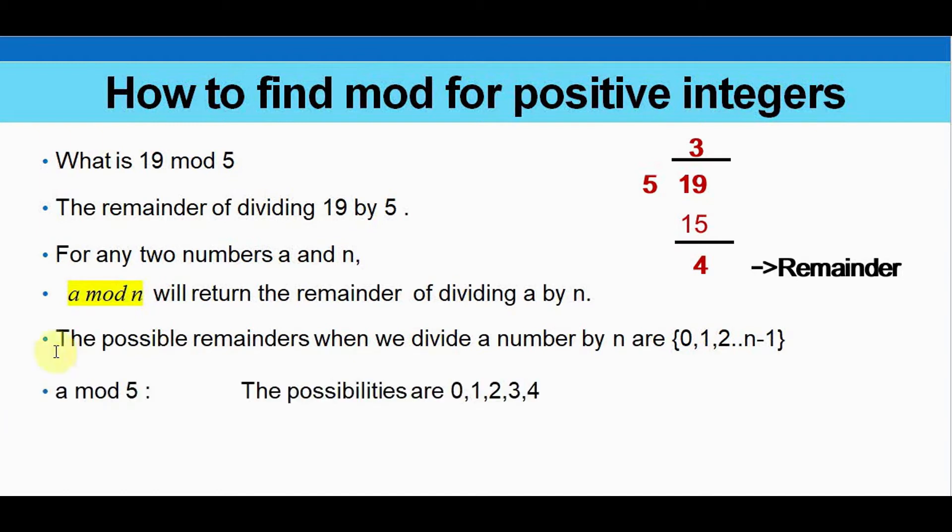So in this case, if you take a mod 5 for any value of a, the possibilities of the remainders are from 0 to 4.